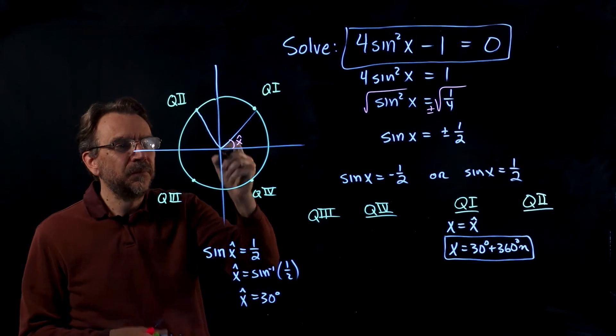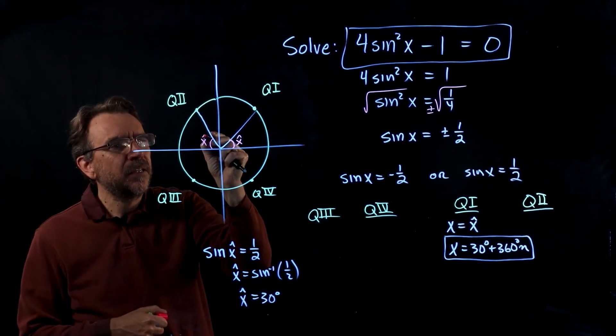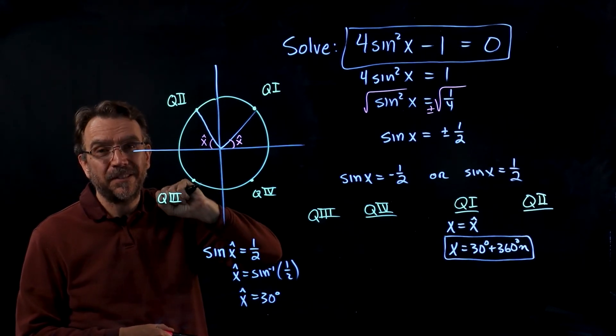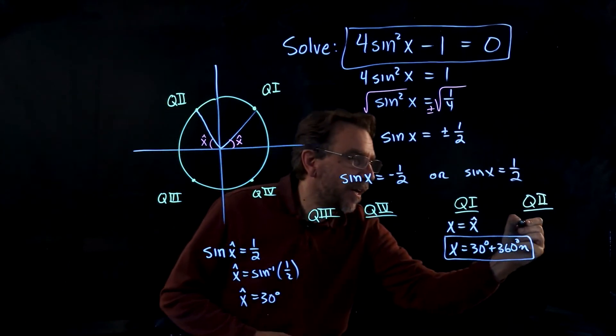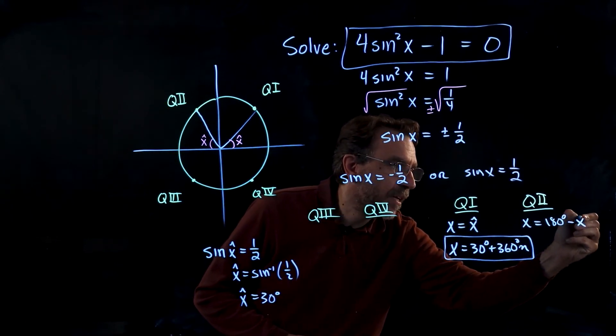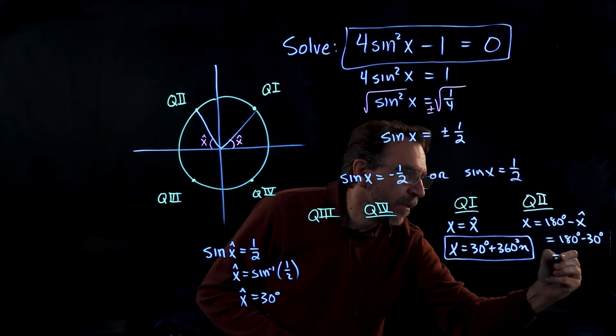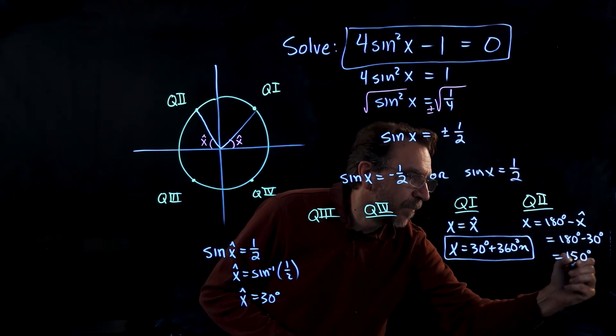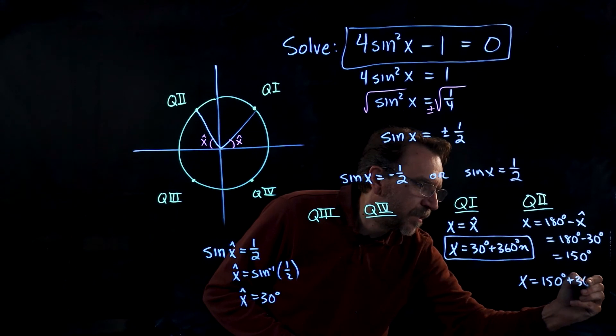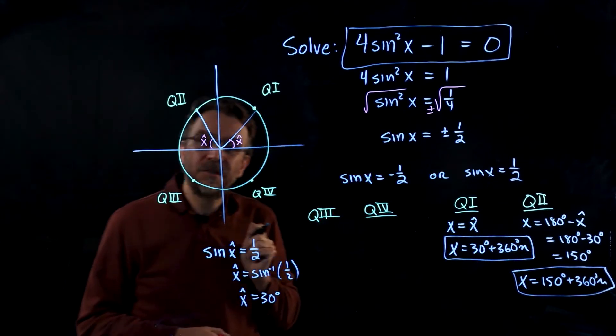Now let's look at quadrant 2. In quadrant 2, we have the reference angle right here. So to calculate the angle x, what we're going to do is take 180 degrees and subtract out the reference angle. All right, we have x equals 180 degrees minus x hat. So 180 degrees minus 30 degrees is 150 degrees. So x equals 150 degrees plus 360 degrees n. Infinitely many answers, co-terminal in quadrant 2.